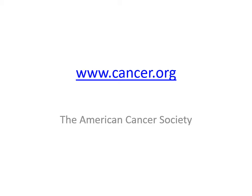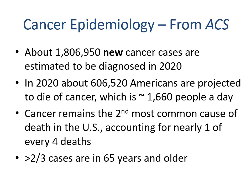Most of this information comes from cancer.org, the American Cancer Society, which provides data and tracking on rates and occurrences. Approximately 1,800,950 new cancer cases were projected to be diagnosed in 2020, with about 606,520 Americans projected to die — approximately 1,660 people per day. Cancer remains the second most common cause of death in the U.S., accounting for nearly one in every four deaths, with more than two-thirds of cases in those 65 and older.